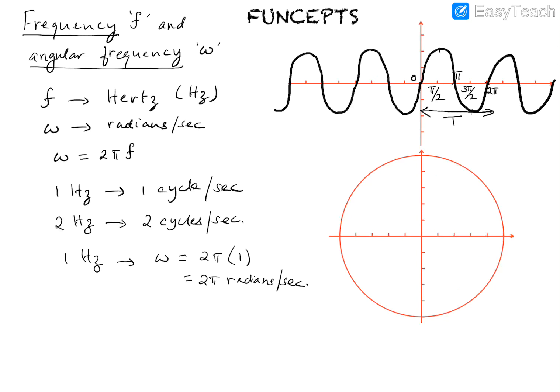Let me draw the phasor. We have a phasor which is rotating in the anti-clockwise direction. The rate at which it rotates corresponds to the frequency in Hertz. For example, one Hertz corresponds to this phasor completing one full rotation in one second. So if this phasor rotates one full circle in one second, that corresponds to a frequency of one Hertz.